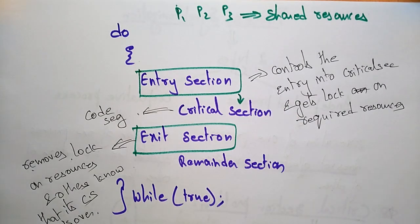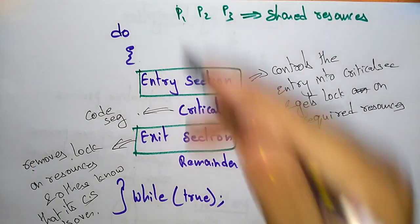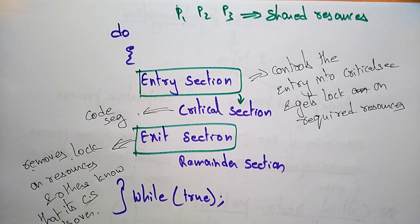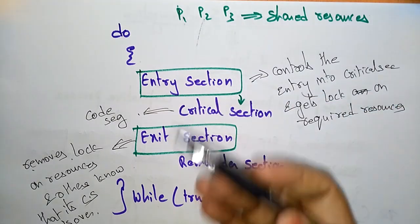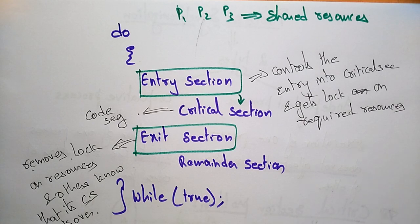This is the critical section problem. It can be solved using some solutions. When multiple processes — P1, P2, P3 — all try to enter at the same time, the system doesn't know which process to take first, and that creates the problem. This critical section problem can be solved using different solutions, which I will explain in the next video.